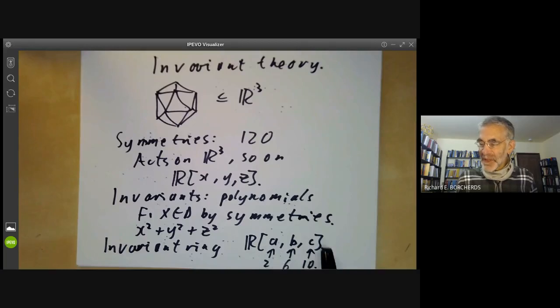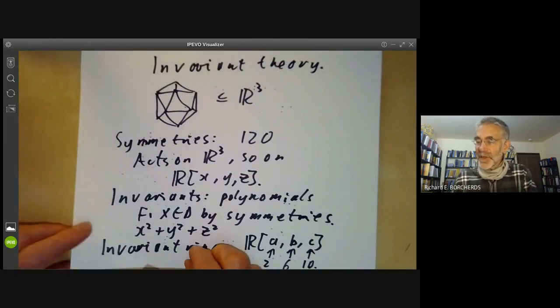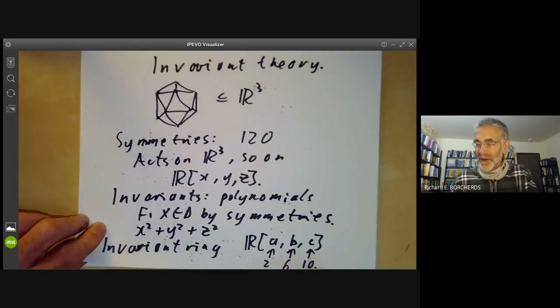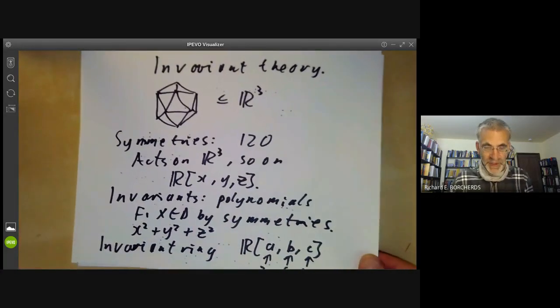The answer turns out to be, sometimes it is finitely generated and sometimes it isn't. This is one of the things we will be discussing. In particular, we will be proving Hilbert's theorem, which says that quite often, the invariant ring is finitely generated.